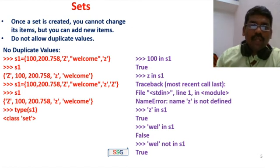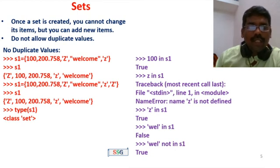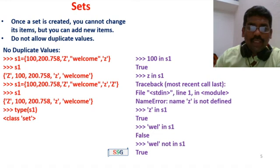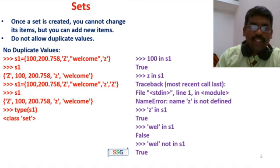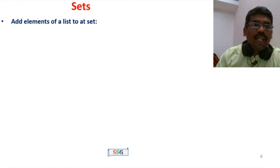Using single quotes: 'well' in S1 — since 'Welcome' is in S1 but 'well' is not, this returns False. 'well' not in S1 returns True. You can check conditions one by one. Next, we look at how to add elements to a set.